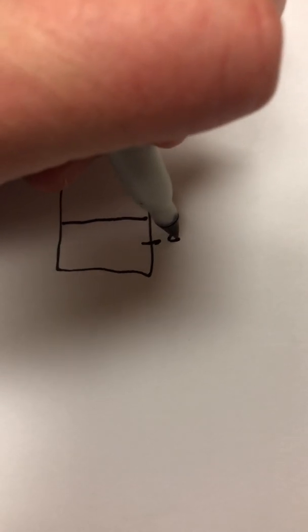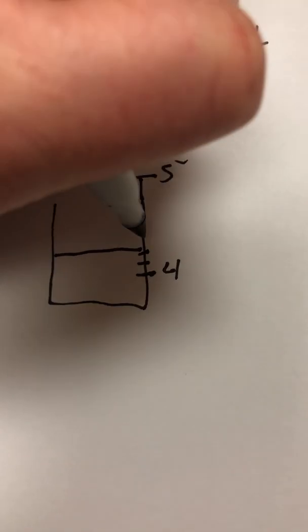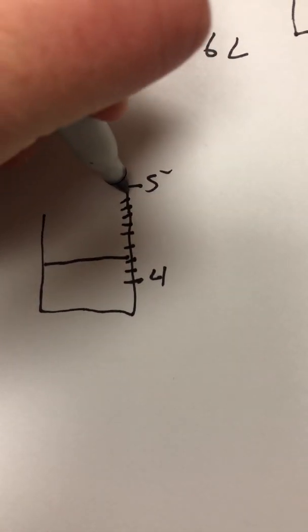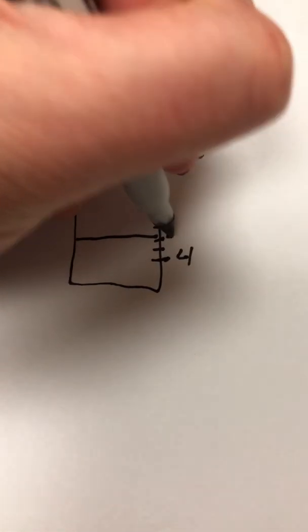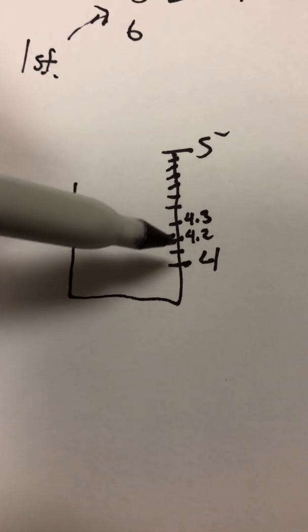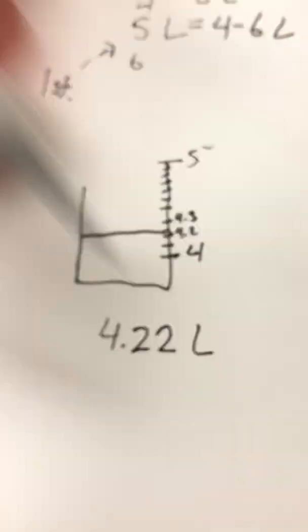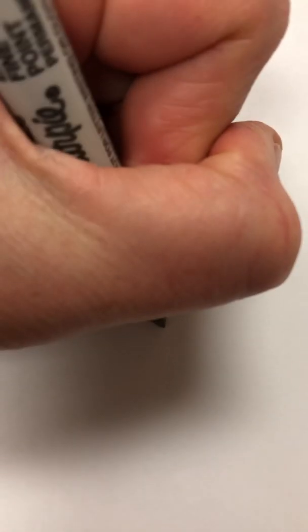Now let's say we take a measurement where it's between 4 and 5, with finer markings: 4.1, 4.2, 4.3, and so on. Now you're not going to say it's 4.2 — you automatically want to guess it's probably like 4.22. Looking at that, these three sig figs — this last one — we're looking at plus or minus 1 of that number. In other words, our range is actually 4.21 to 4.23 liters.